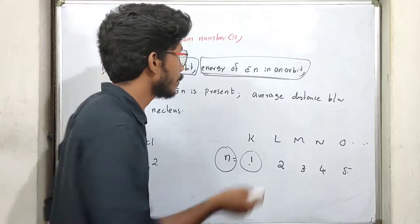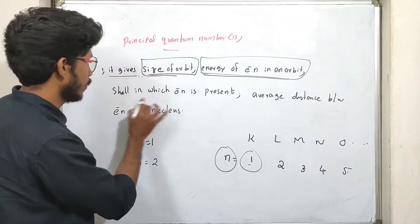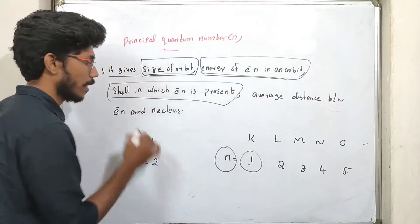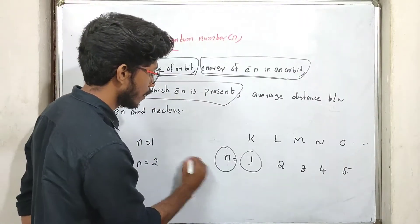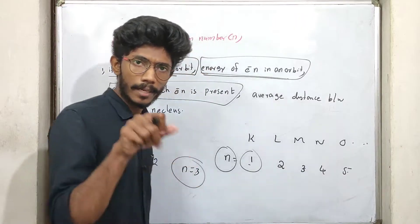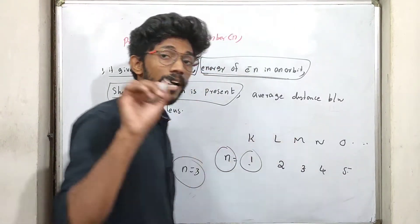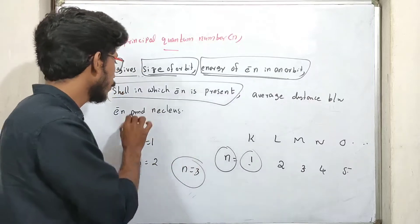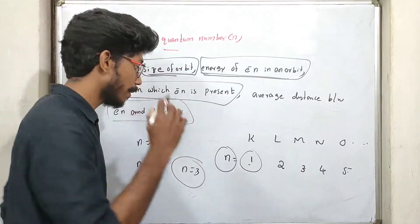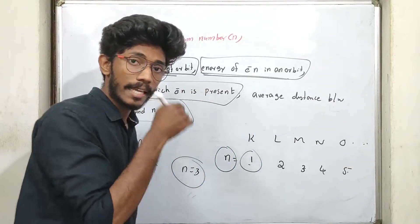The energy of an electron in the orbit, and the shell in which the electron is present. For example, n=3 corresponds to the M shell.